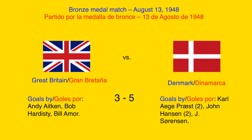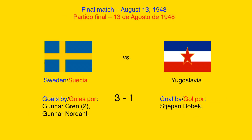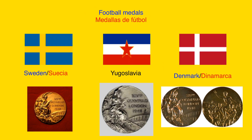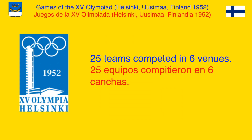In the bronze medal match, Great Britain was beaten by Denmark 3-5. In the final match, Sweden beat Yugoslavia 3-1. The football medals given at the 1948 Summer Olympic Games were the golden medal for Sweden, the silver medal for Yugoslavia, and the bronze medal for Denmark.